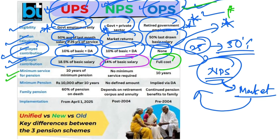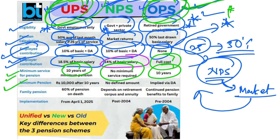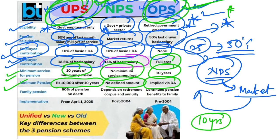Regarding minimum service for pension: in the Unified Pension Scheme, the minimum service required is 10 years. In the New Pension Scheme, there is no minimum service requirement. In the Old Pension Scheme, it is 10 years — so UPS and OPS share this similarity. The minimum pension in UPS is Rs. 10,000 for 10 years of service. In NPS, there is no assured income as it completely depends on market returns. In OPS, pension depends on dearness allowance.